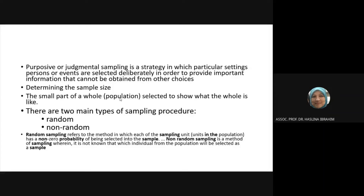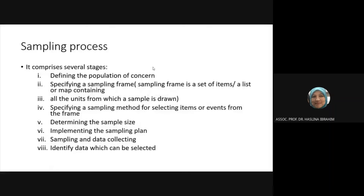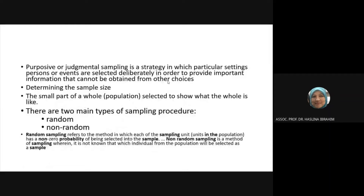Random sampling refers to the method in which each of the sampling units has a non-zero probability of being selected into the sample. Non-random sampling is a method when it is not known which individual from the population will be selected as a sample.